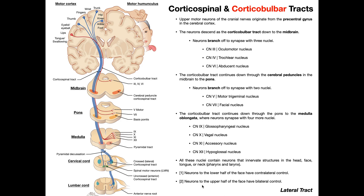Two other things are really important to understand here. Neurons to the lower half of the face have contralateral control, and neurons to the upper half of the face have bilateral control. If we consider the zygomaticus major on the left side, it is controlled solely by the right half of the brain — contralateral control. So if you had a stroke of the right half of the brain in the motor cortex, damaging the right upper motor neurons of the corticobulbar tract, then the left zygomaticus major and all muscles on the left side of the lower face will have paresis, because their only source of control is that contralateral side.